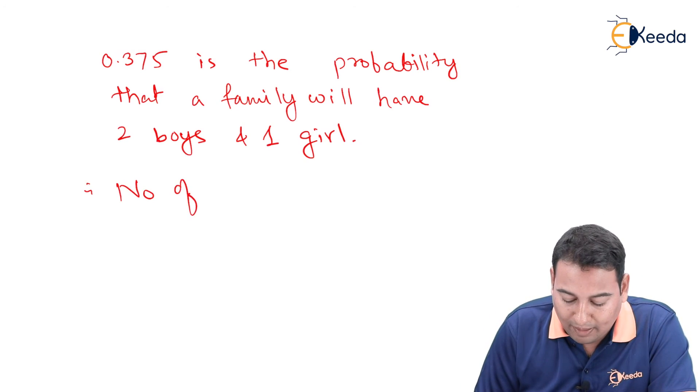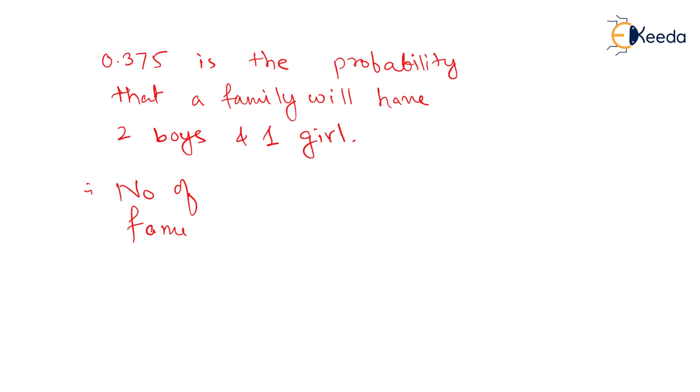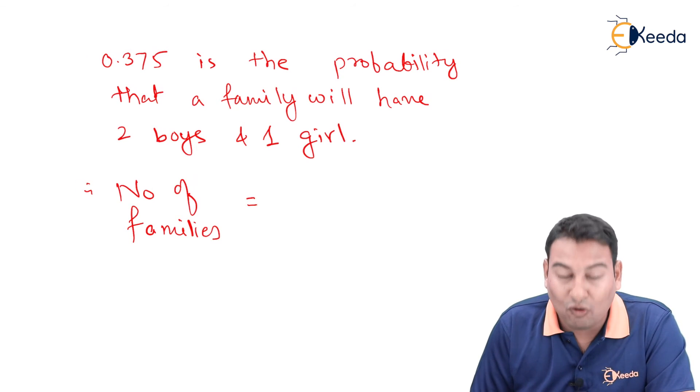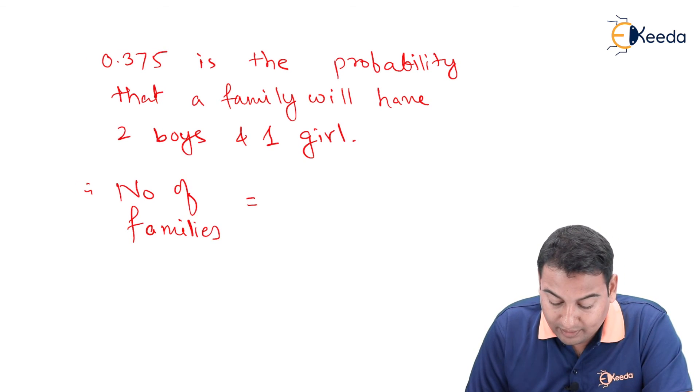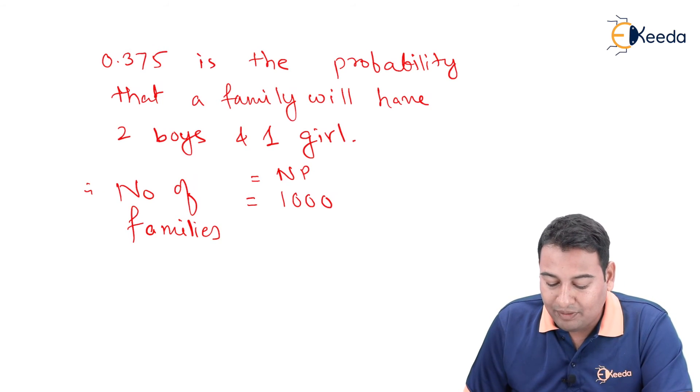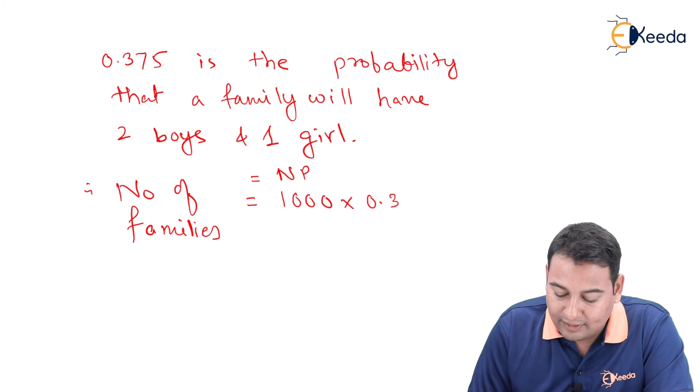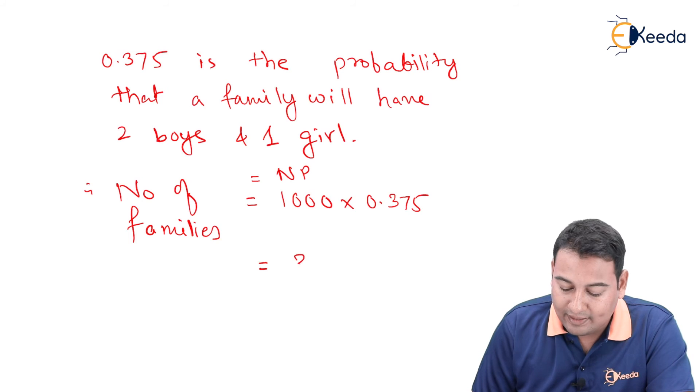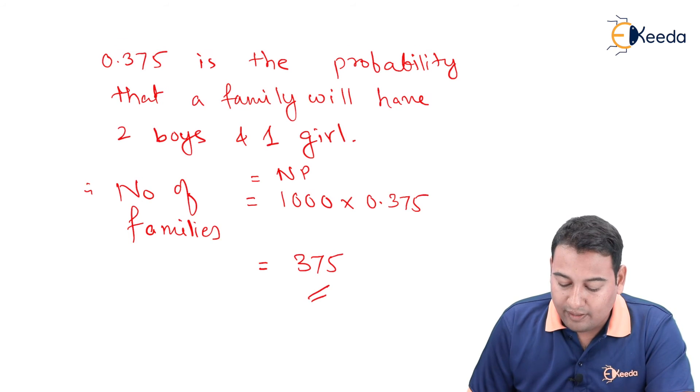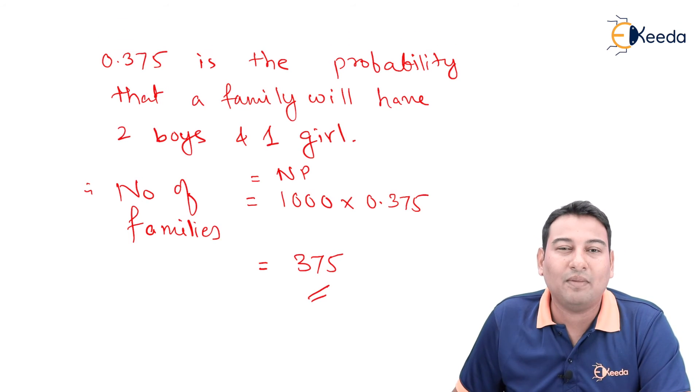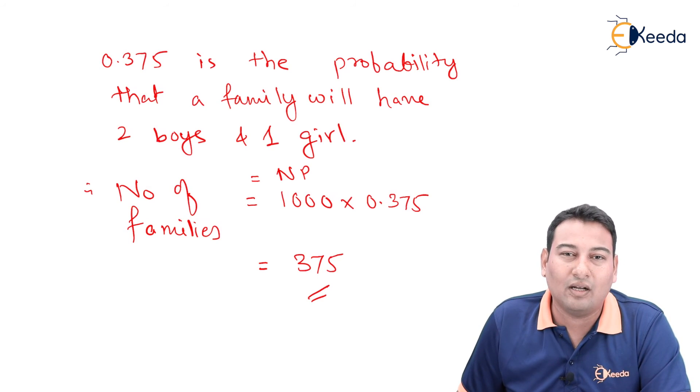Therefore, number of families, this is the probability for one family. Number of families will be multiplied by capital N, that is NP. Here capital N is 1000 into probability that you got, 0.375. If you multiply, the answer is 375. Therefore, 375 families will have 2 boys and 1 girl.